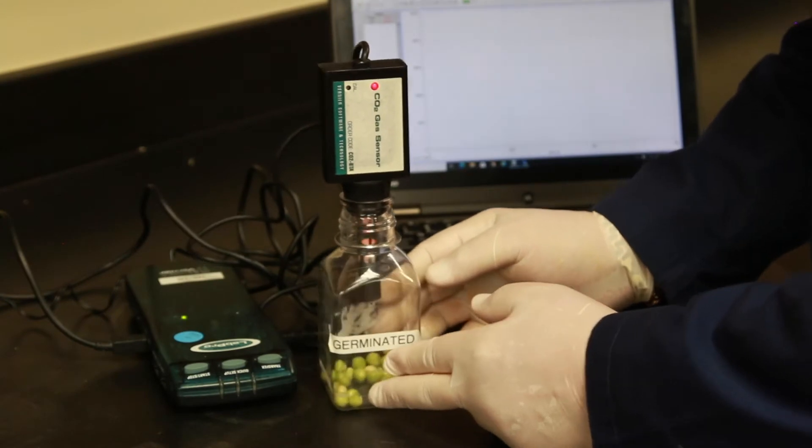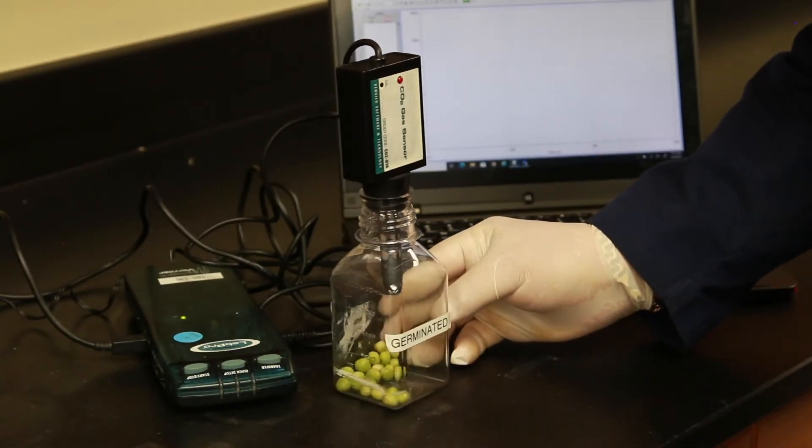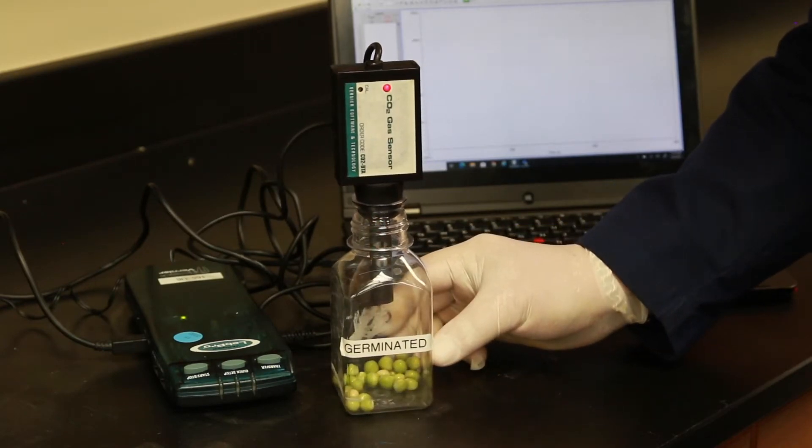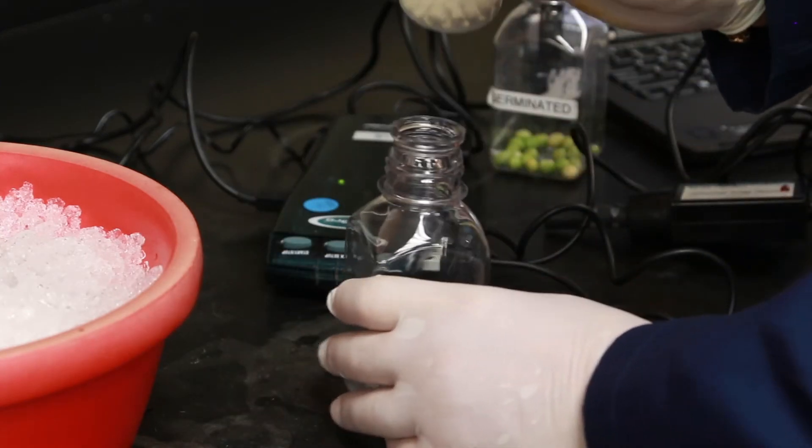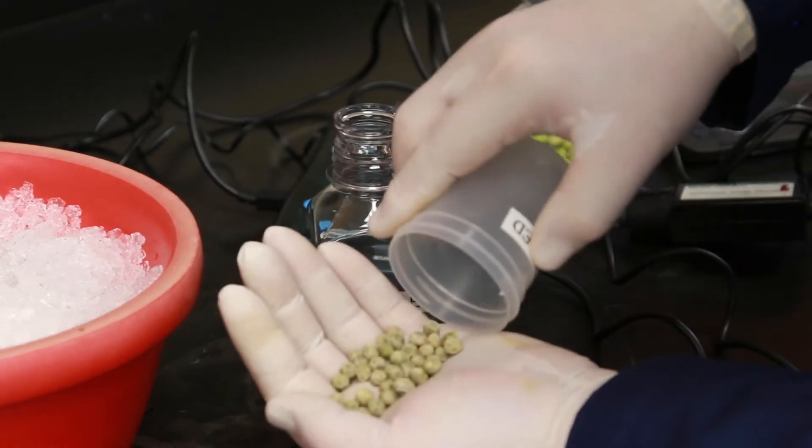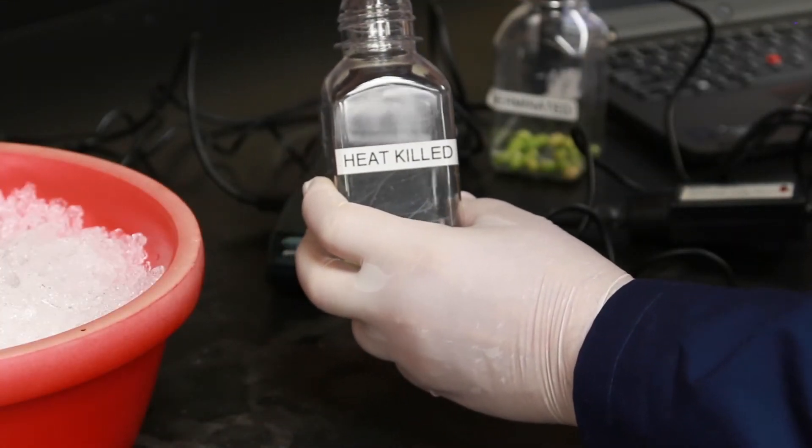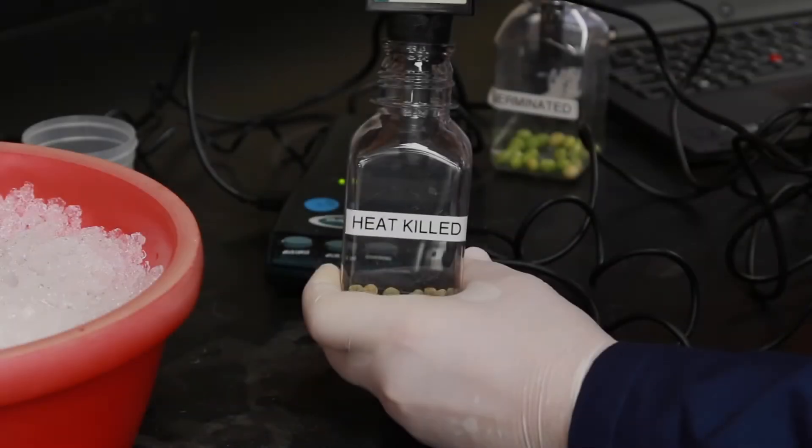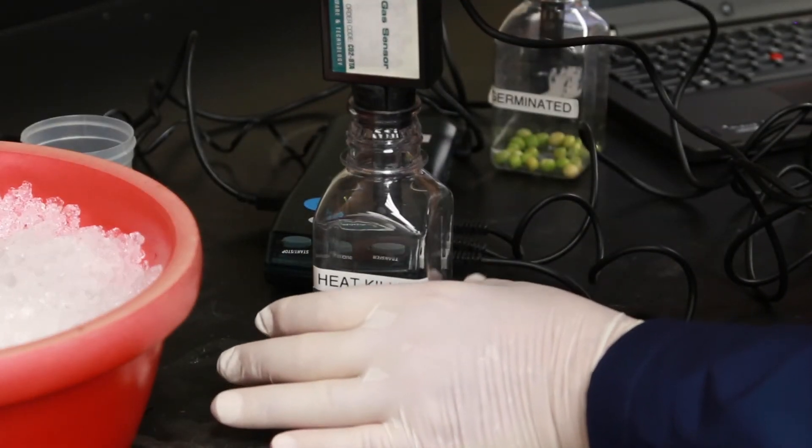While we're waiting for the germinated peas to finish their equilibration we will go ahead and repeat this process with heat killed peas as well as with the cold peas. So we count out 25 of the heat killed peas. They are then placed in their own labeled plastic flask. We add the CO2 sensor and allow that to equilibrate for one to two minutes.